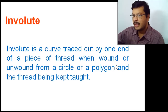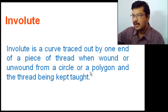In this tutorial, I will explain how to draw an involute. The definition of the involute is something like this: an involute is a curve traced out by one end of a piece of thread when wound or unwound from a circle or polygon, with the thread kept tight. That means when you are winding or unwinding the thread around a circular or polygonal disk, you will get an involute.